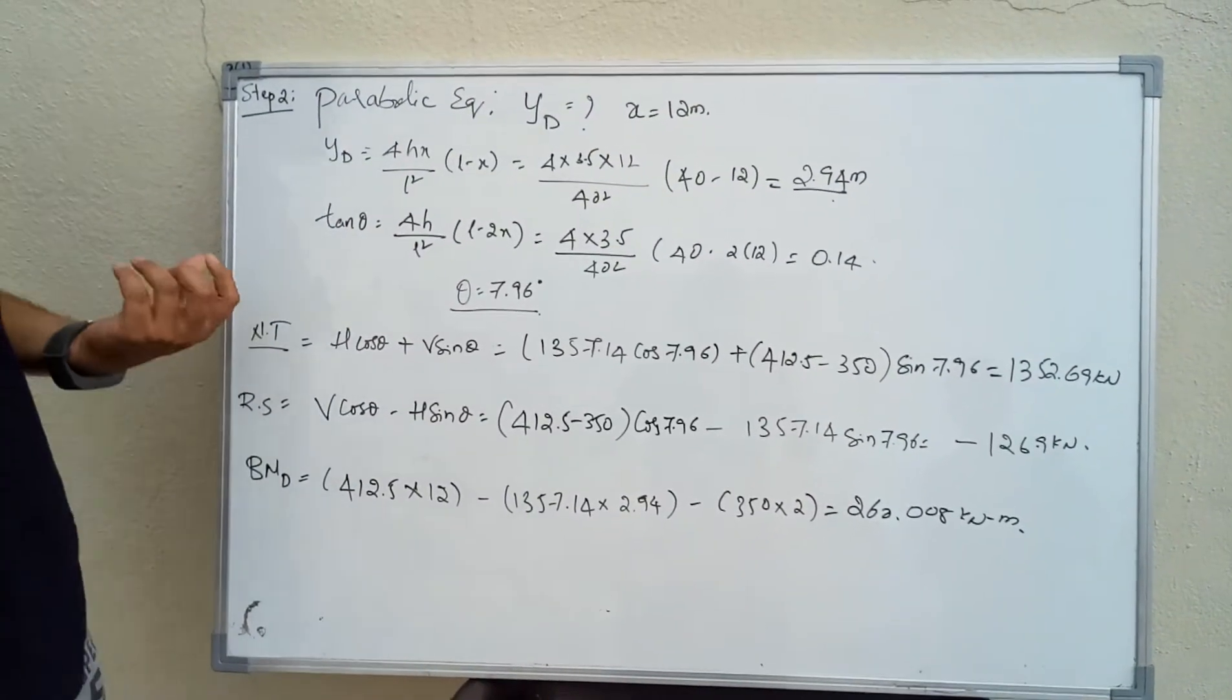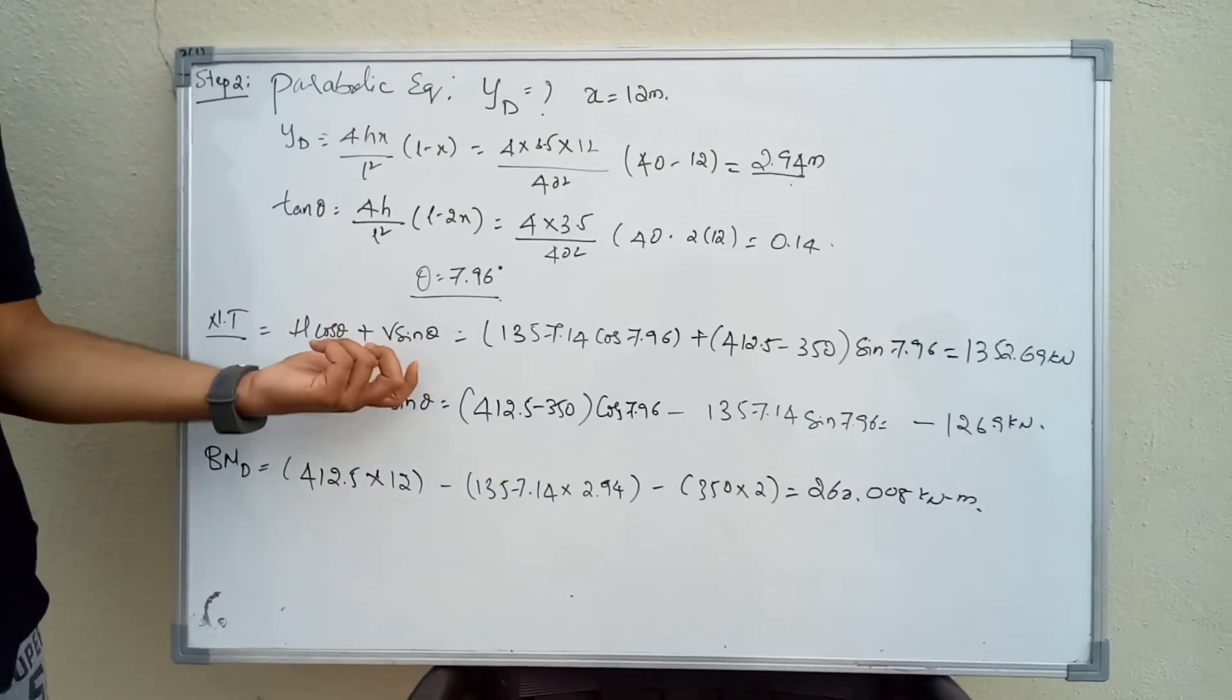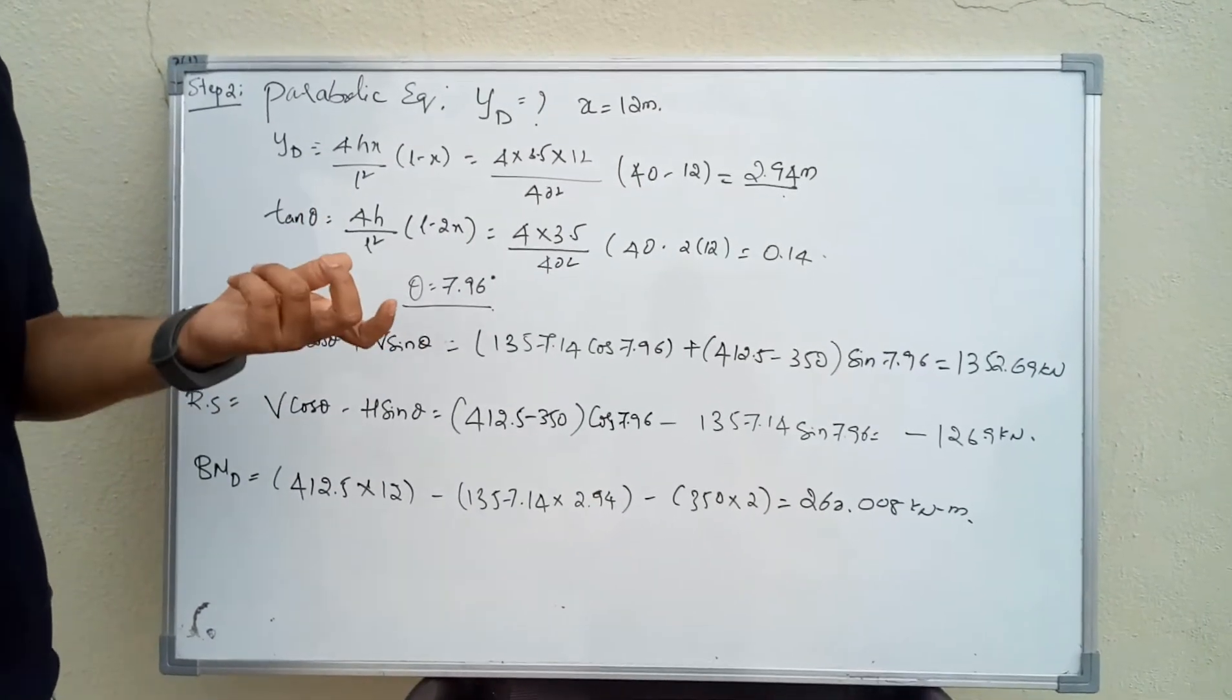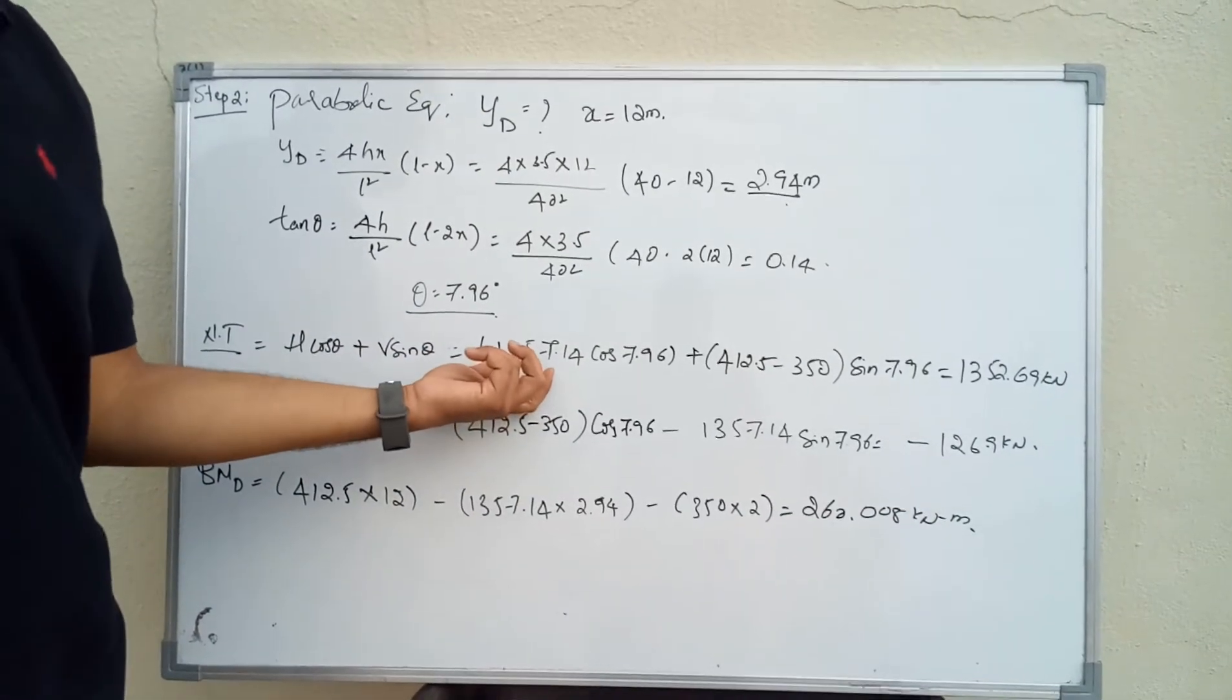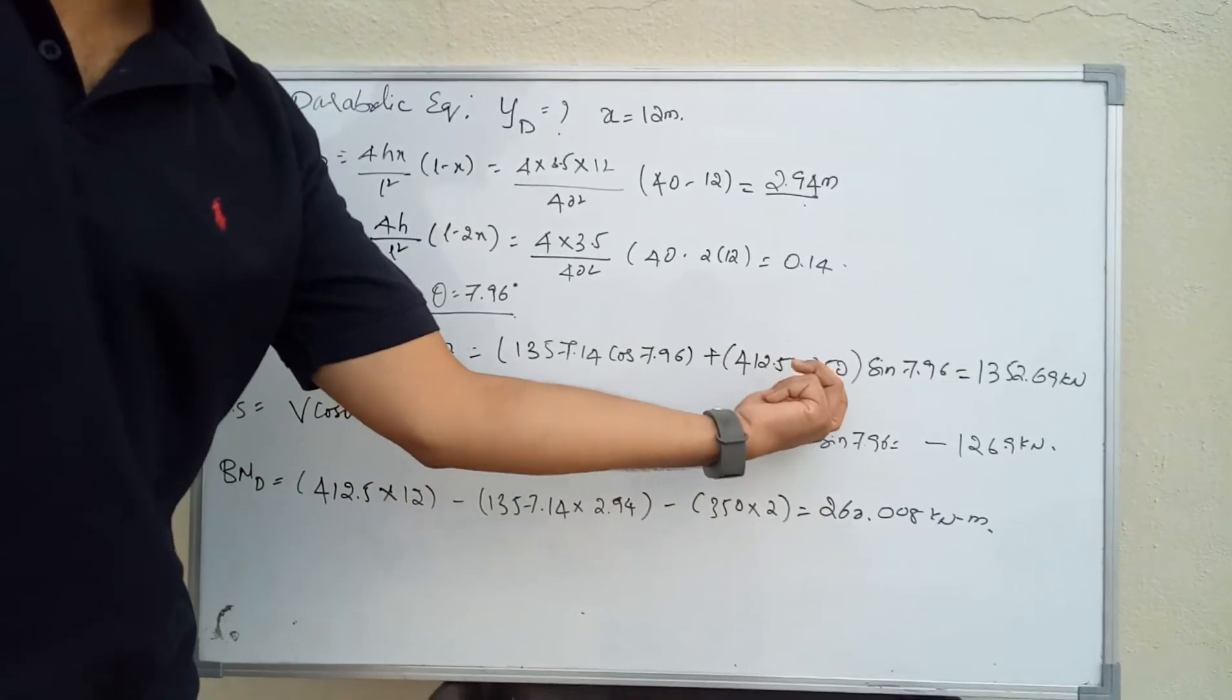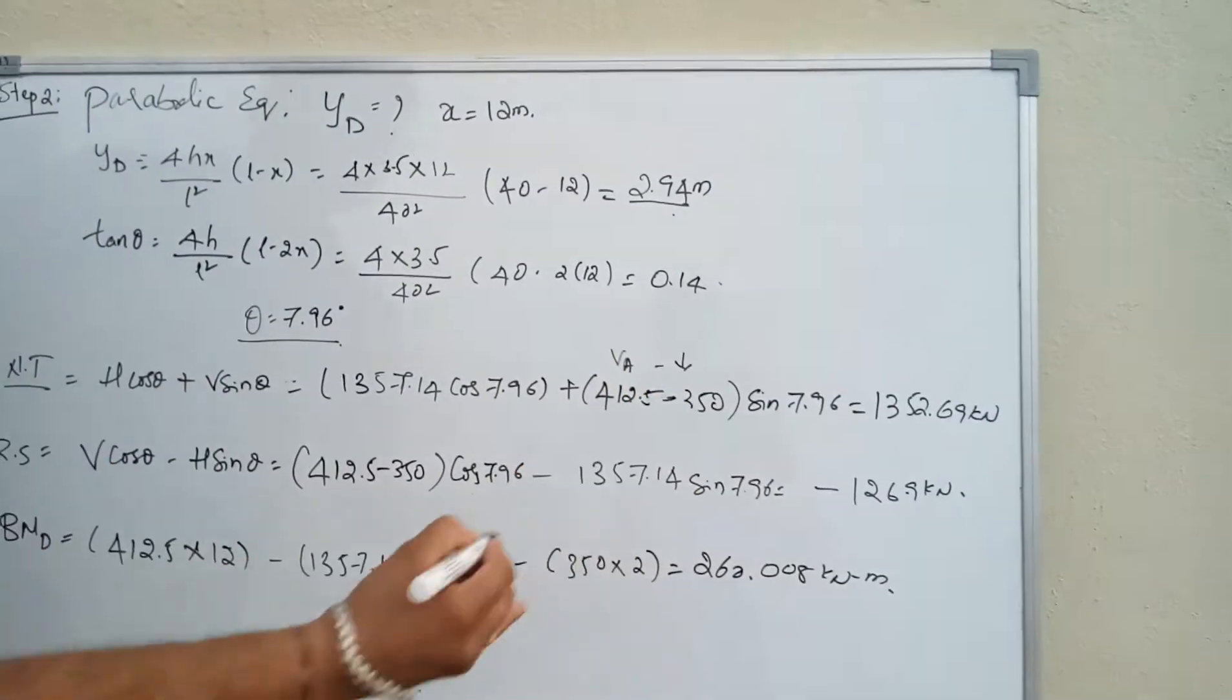Finally, we want to find NT and RS. What is NT? Normal thrust. The formula is H cos theta plus V sin theta. H is the net horizontal force and V is the net vertical force. The horizontal force acting is HA, that is cos theta, and V - this is VA minus the point load.